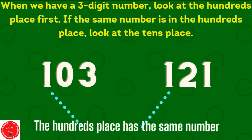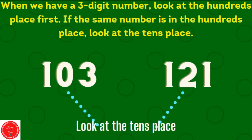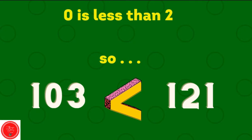When you have a three-digit number, look at the hundreds place first. If the same number is in the hundreds place, look at the tens place. So when we have these two numbers, they both have a one in the hundreds place. So now we're going to check the tens place — it's going to be the number in the middle. Here we have zero, here we have two. Zero is less than two, so 103 is less than 121.